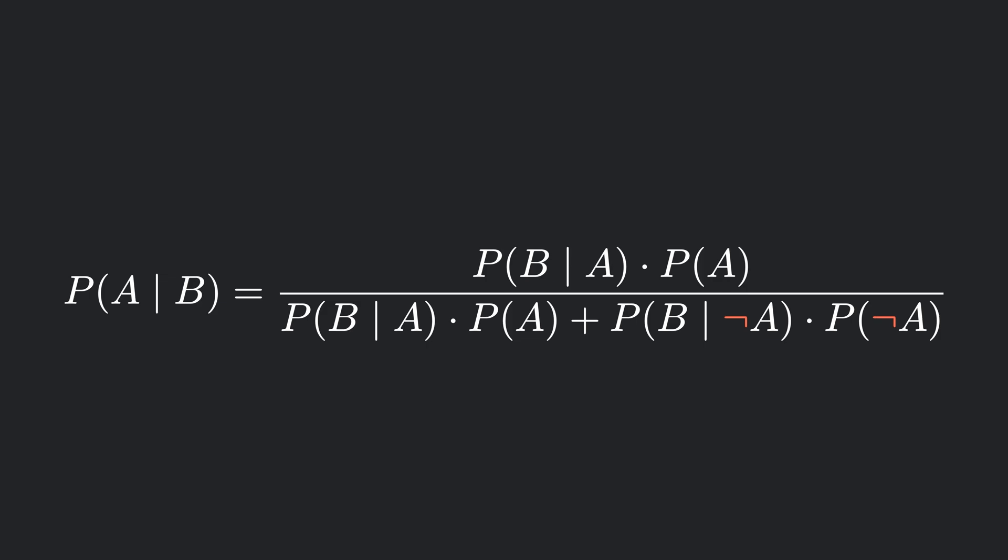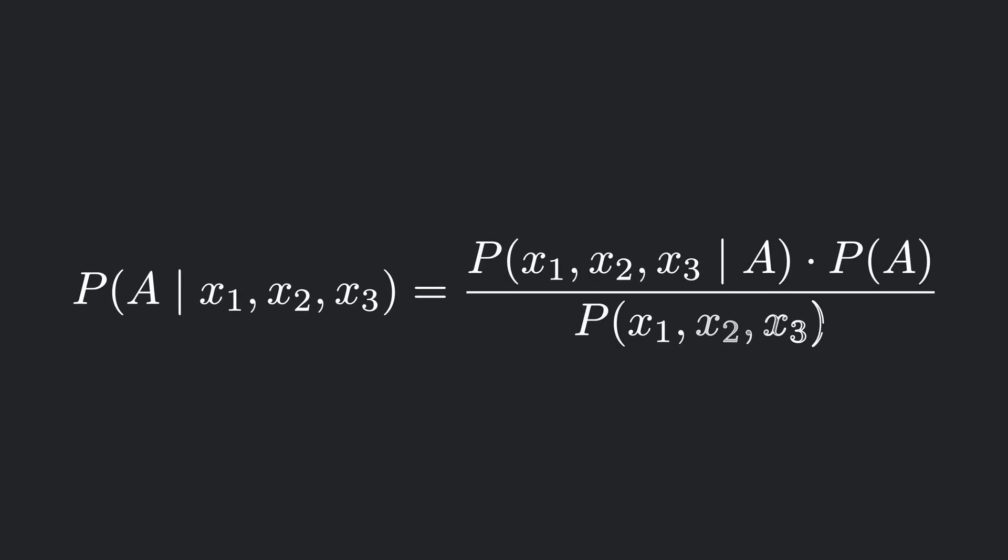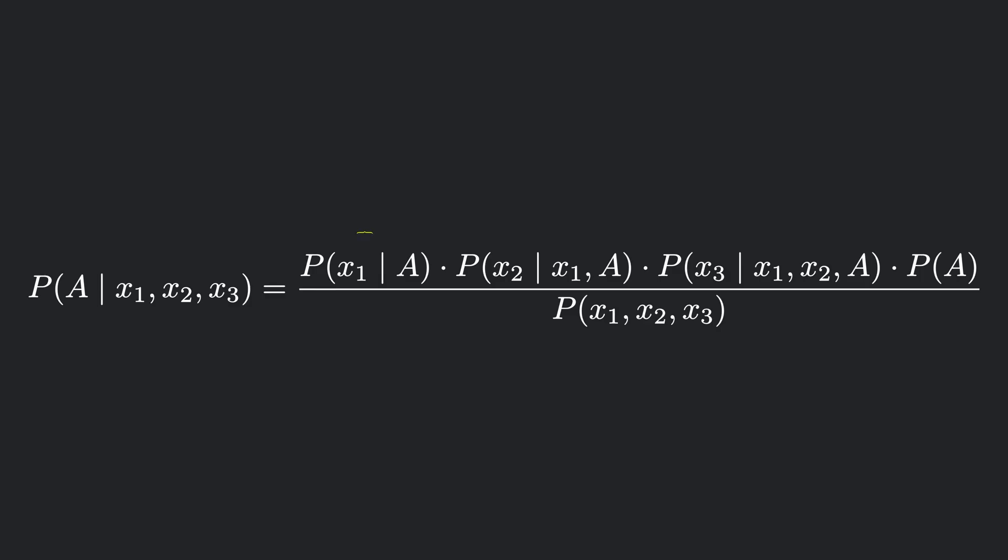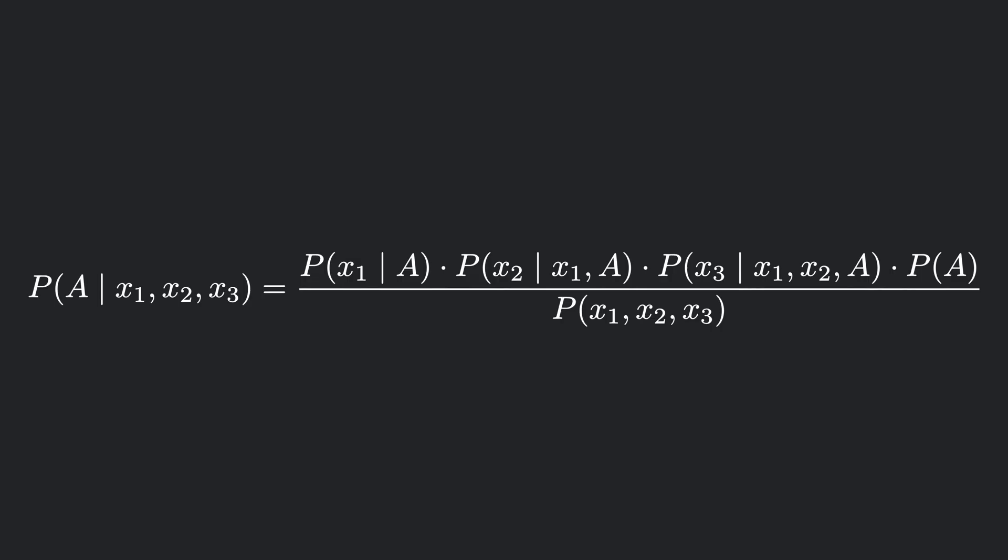Now this formula is not just valid for one event. We can have multiple events that might affect the probability. Let's take an example where we have three different events affecting the probability of event A. The expanded form will look something like this. Here the first term is the probability of event x1 given that event A has occurred, multiplied by the probability of event x2 given that both x1 and A have occurred, multiplied by the probability of x3 given that x1, x2, and A all have occurred together. And finally, all of that multiplied by the probability of A happening. And the denominator term, just like before, is the total probability of these three events happening, either given A has occurred or A has not occurred. This equation is the case where events x1, x2, and x3 are all influencing each other.